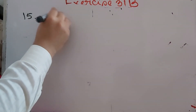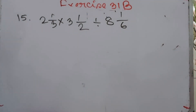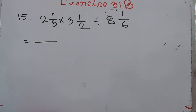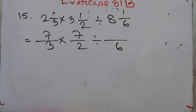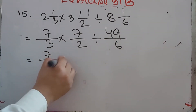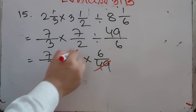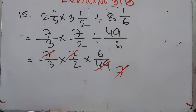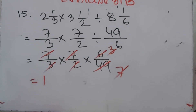Number 15: 2 whole 1/3 times 3 whole 1/2 divided by 8 whole 1/6. Convert: 3×2 = 6 plus 1 = 7/3; 2×3 = 6 plus 1 = 7/2; 6×8 = 48 plus 1 = 49/6. Multiply 7/3 × 7/2 × 6/49. Divide 49 by 7 = 7, divide 7 by 7 = 1, divide 6 by 2 = 3, divide 3 by 3 = 1. The answer is 1.